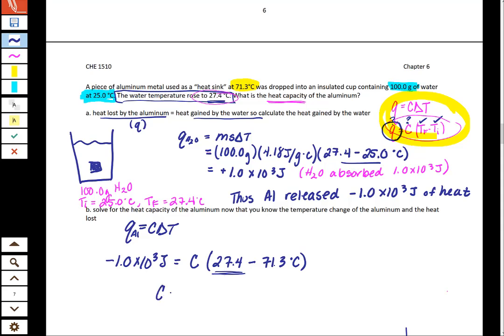So we do a quick division and we end up with 23 joules per degree Celsius.